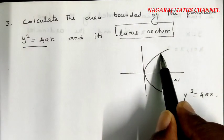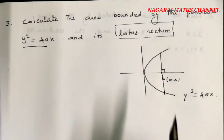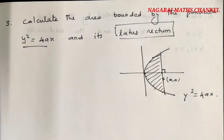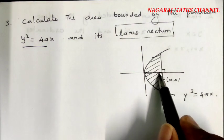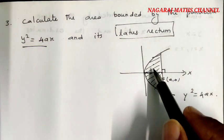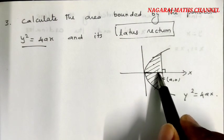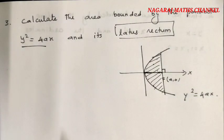We need to find the area between the latus rectum and the parabola. There is area above the x-axis as well as below the x-axis. Due to symmetry, we can calculate one area and multiply by 2.